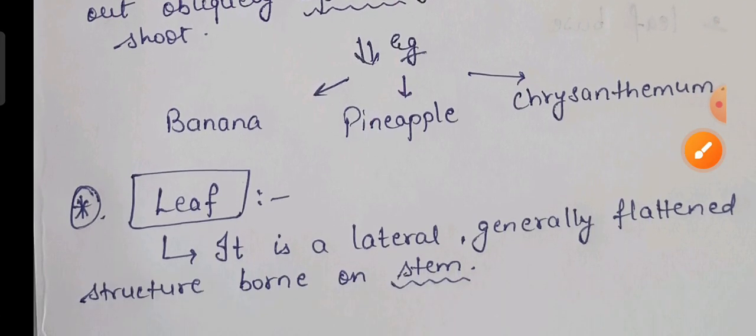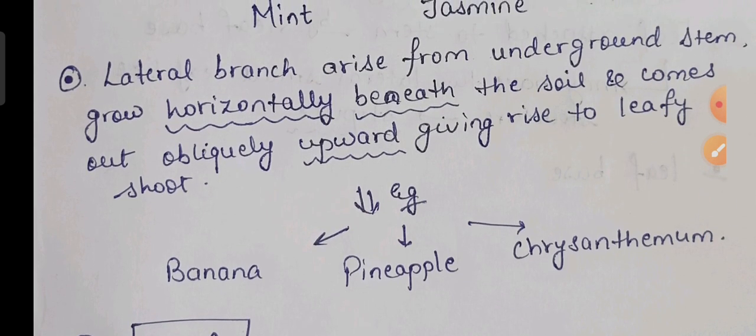Now we will talk about the leaf. Basically, the leaf is the lateral, generally flattened structure born on the stem. That's all for today. If you have liked our video, please do not forget to like, share, and subscribe to our channel. You can also tell us your views in the comment section. Thank you so much.